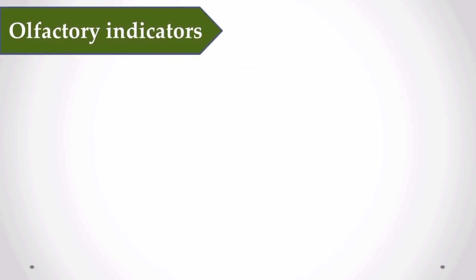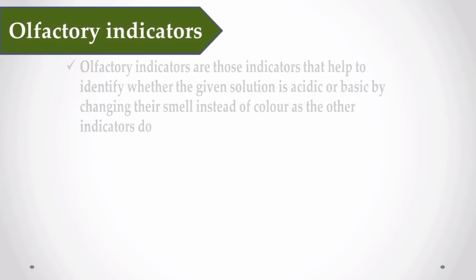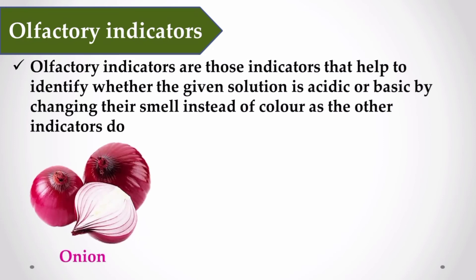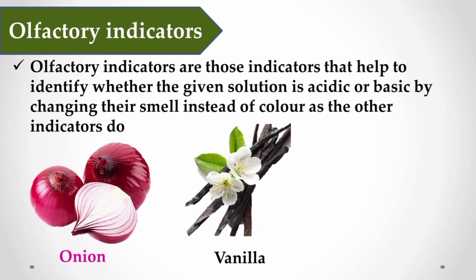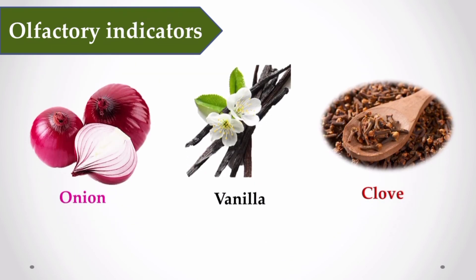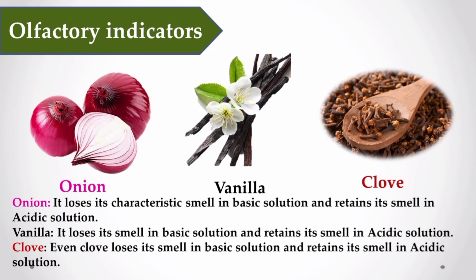Some substances change their smell when mixed with acid or base — such indicators are known as olfactory indicators. Olfactory indicators identify acids and bases through a change in smell. Onion, vanilla, and clove are examples of olfactory indicators. Most of these olfactory indicators retain their smell in an acidic medium but lose their smell in the basic medium.